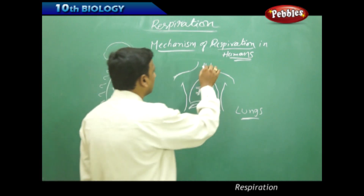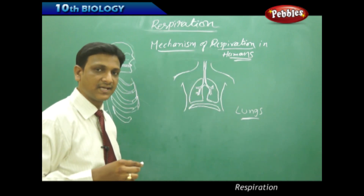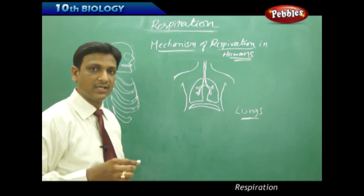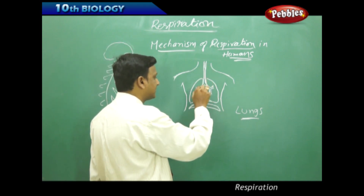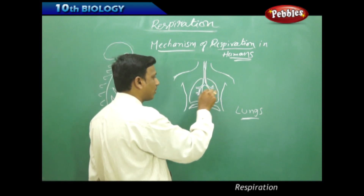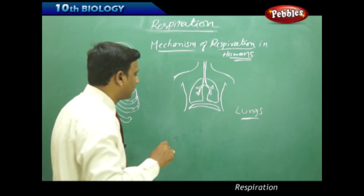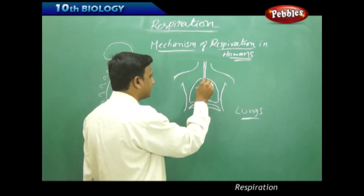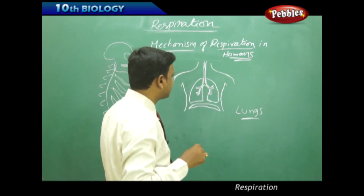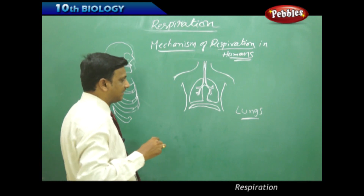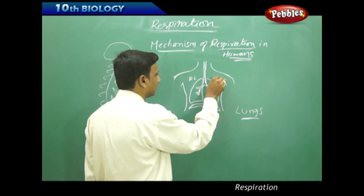We have already seen the passage of air: nostrils, nasal cavity, pharynx, larynx, and trachea. The trachea is divided into bronchi, and bronchi into bronchioles. The trachea is divided into two bronchi — left and right — and here we can see the left and right lungs.